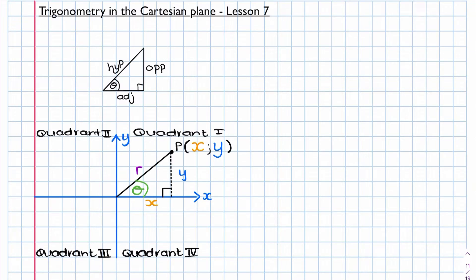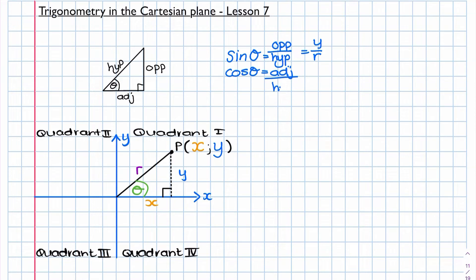The next thing is how this relates to our trig ratios. Sine theta is normally opposite over hypotenuse, but on the Cartesian plane the opposite is y and the hypotenuse is r, so sine theta equals y over r. Cos theta is adjacent over hypotenuse, and now adjacent becomes x and hypotenuse remains r, so cos theta equals x over r. Tan theta is normally opposite over adjacent, which now becomes y over x.